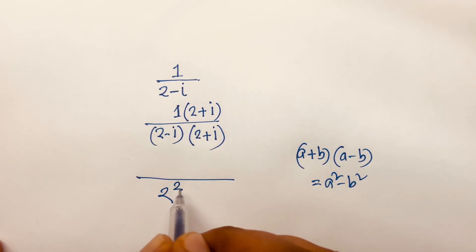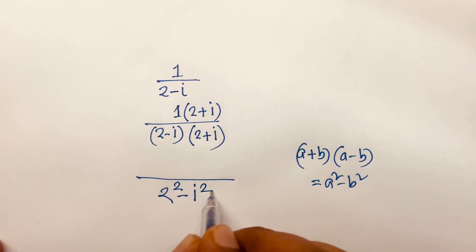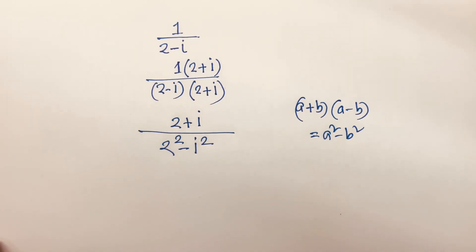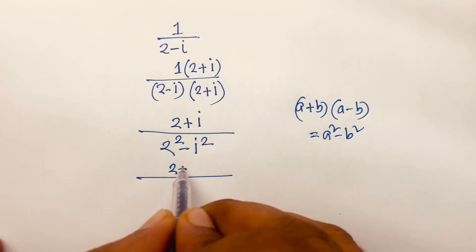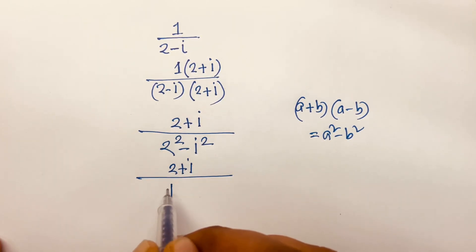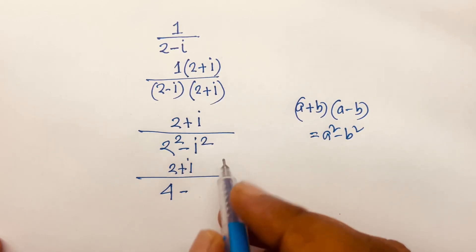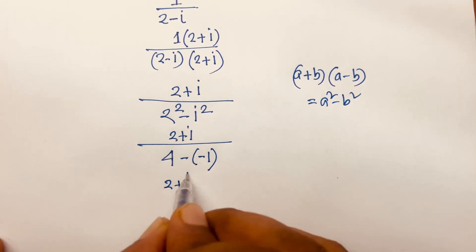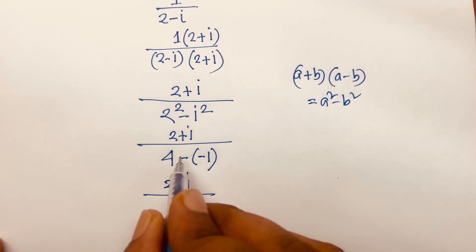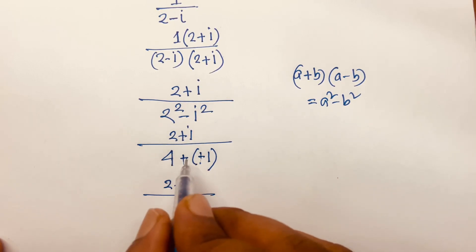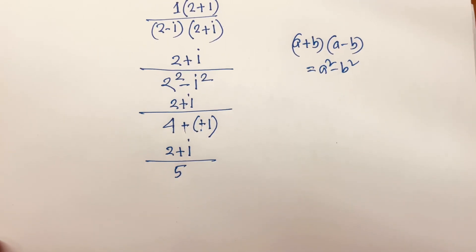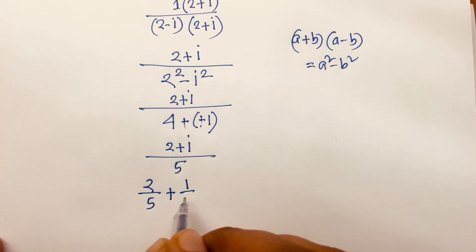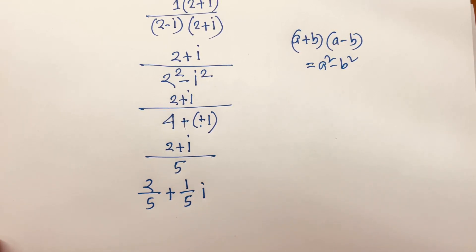So the denominator is 2 squared minus i squared. Since i squared equals minus 1, it becomes 4 minus (minus 1), which is 4 plus 1 equals 5. So the expression simplifies to (2 plus i) over 5, giving us 2 over 5 plus (1 over 5)i.